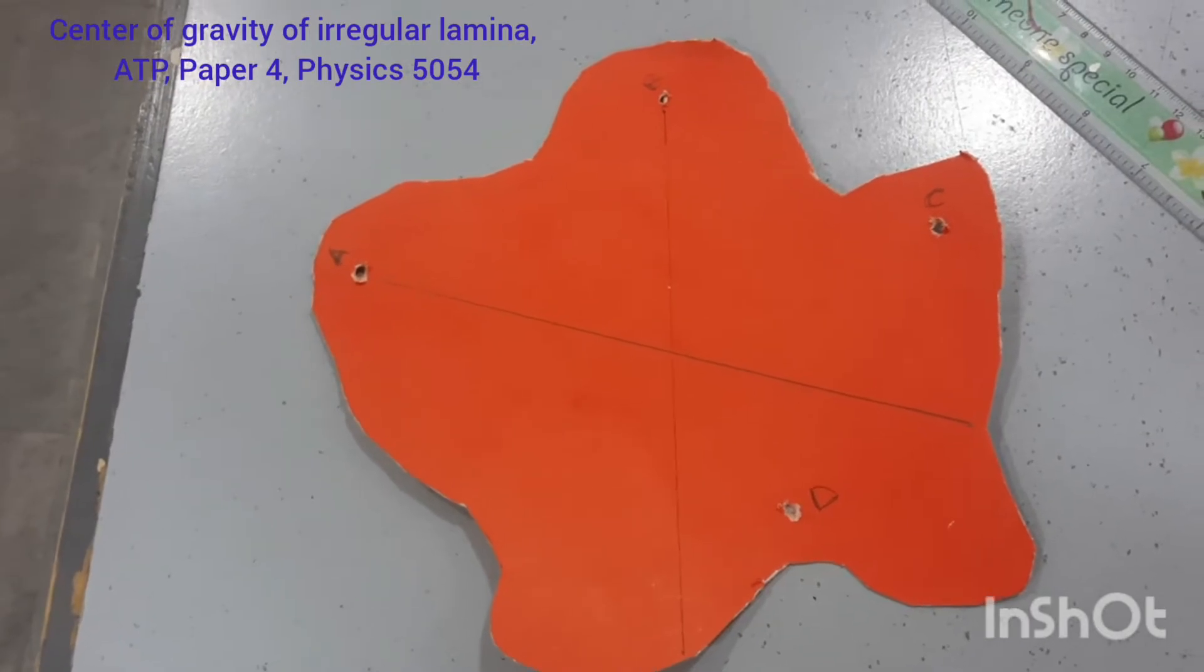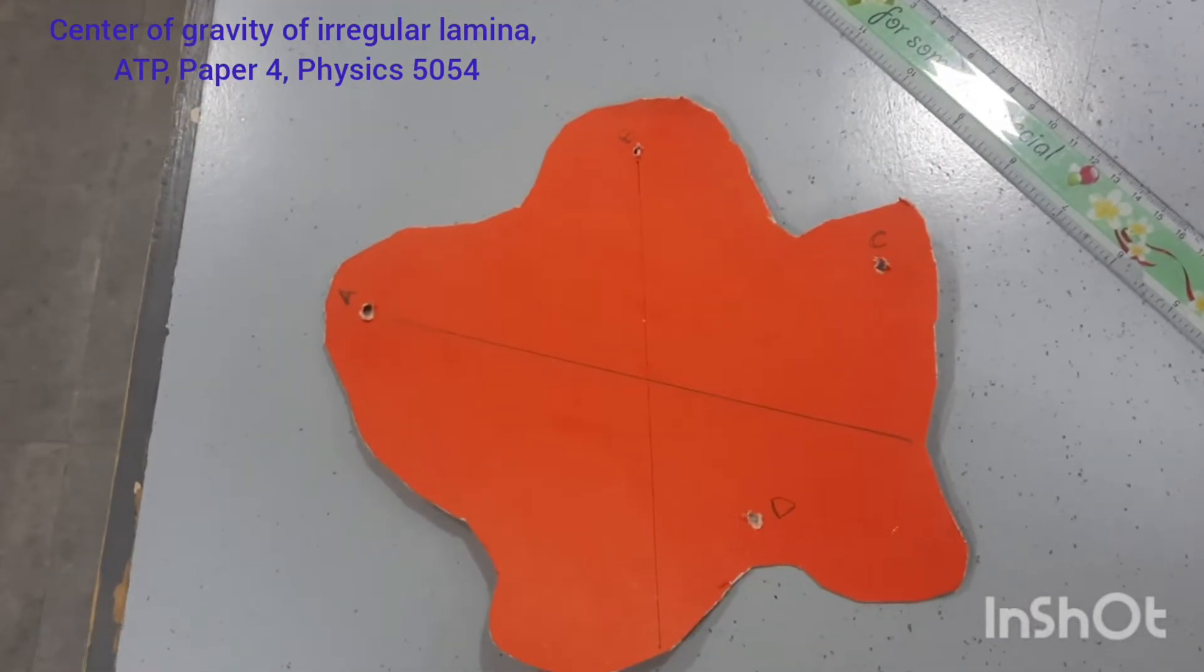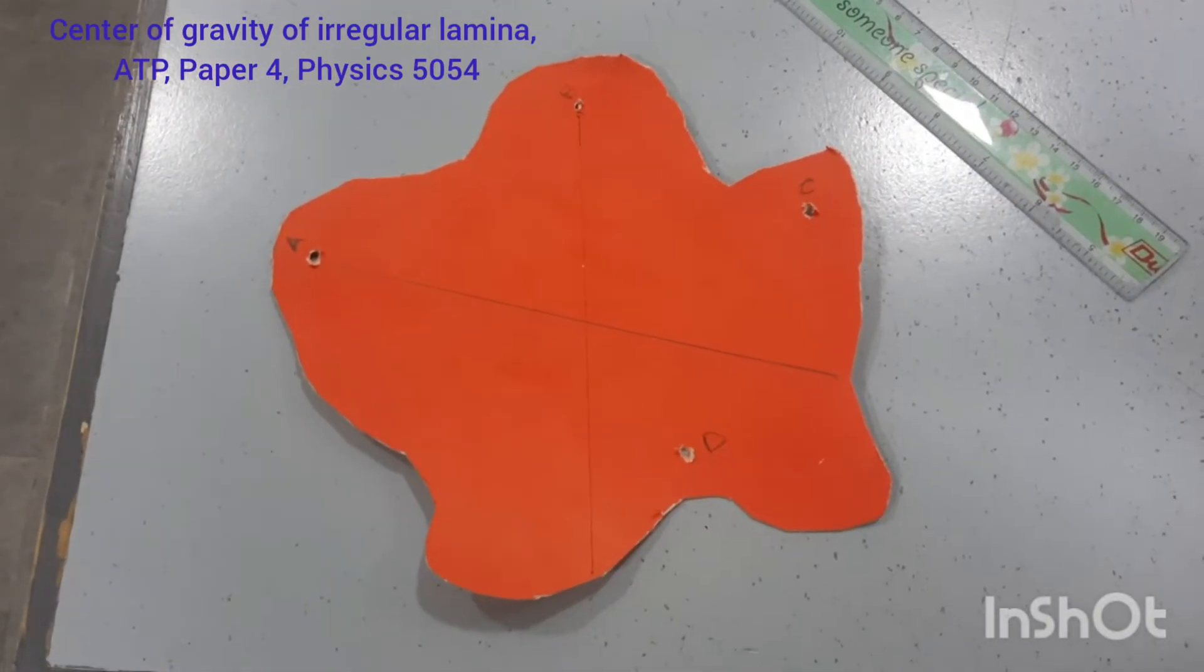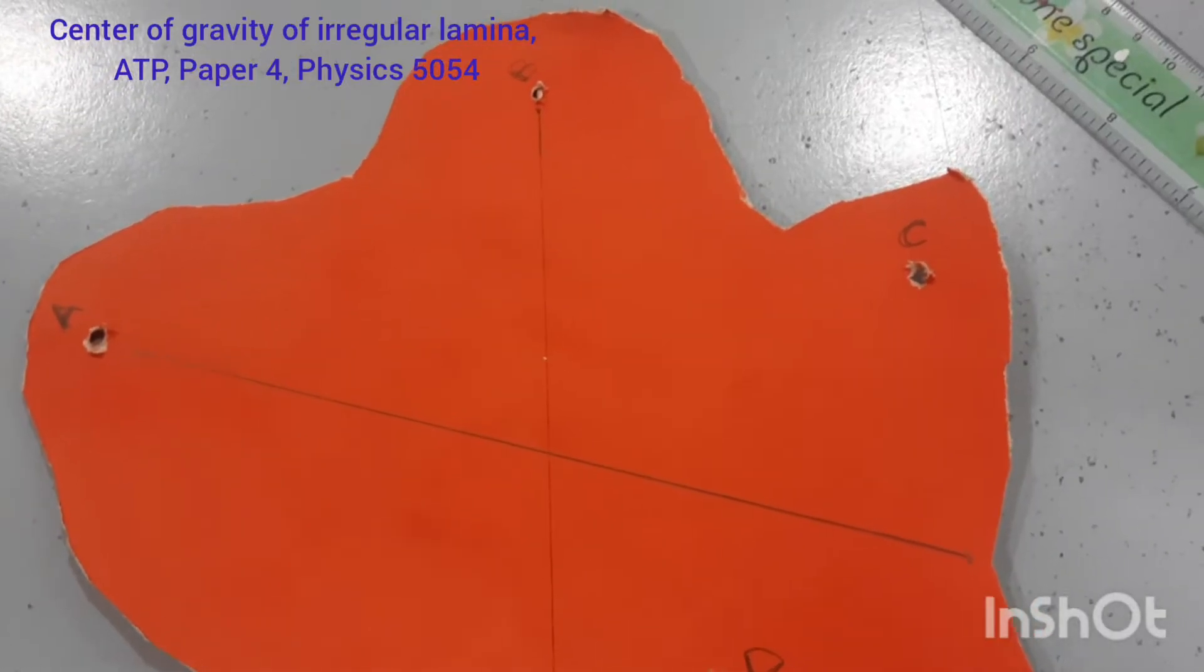So you can see that we have drawn another line. So where these two lines intersect each other, that will be the center of the gravity.